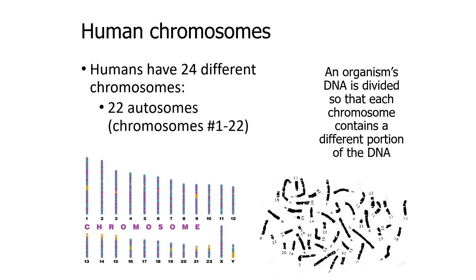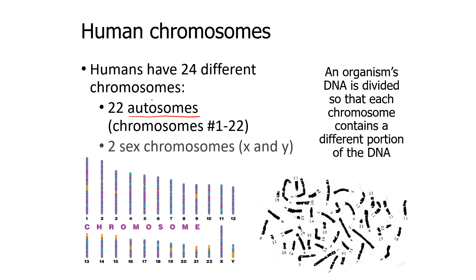We can take these 24 chromosomes and split them into two different groups. The first group has the majority of the chromosomes and they're called autosomes — chromosomes numbered 1 through 22. The remaining two chromosomes, the X and Y, we call those the sex chromosomes.